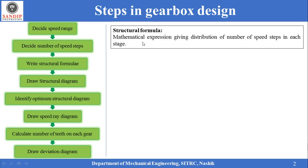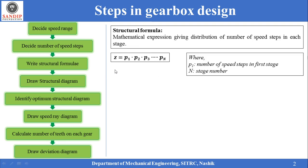The structural formula is the mathematical expression giving the distribution of the number of speed steps in each stage. It can be written as z = p1 × p2 × p3 × ... × pn, where z is the total number of speed steps, p1 is the number of speed steps in the first stage, p2 is the number of speed steps in the second stage, and so on. N is the stage number, and obviously this multiplication must equal the total number of speed steps.